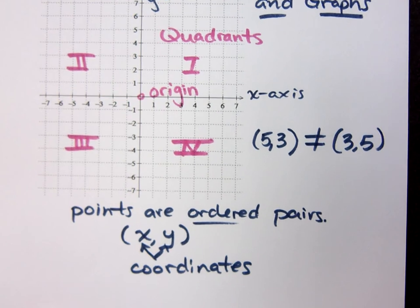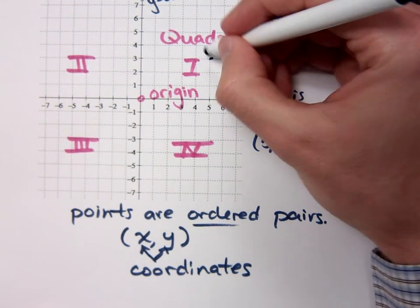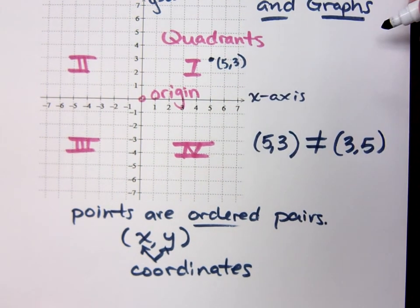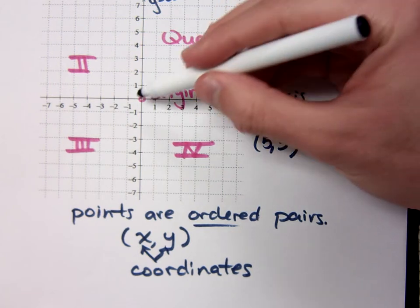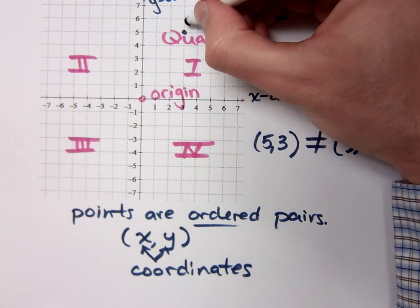And if you're not sure about that, check it out. x is 5 and y is 3, so that's this guy right here. That's the ordered pair (5,3). Where's (3,5)? x is 3, y is 5 is up here.